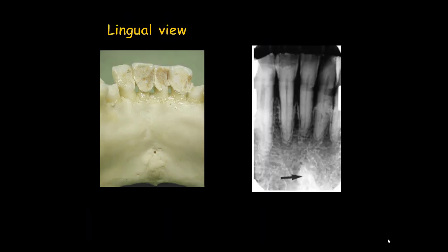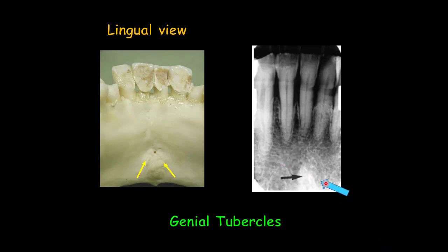On the lingual surface you see the genial tubercles, also called the mental spine. These are bony projections located on the lingual surface at the midline, and they serve as attachments for muscles like genioglossus and geniohyoid. On the practical imaging of the mandibular incisors, they appear as a radiopaque area in the midline, almost at the apex of the incisors.